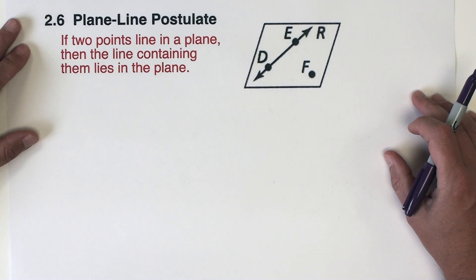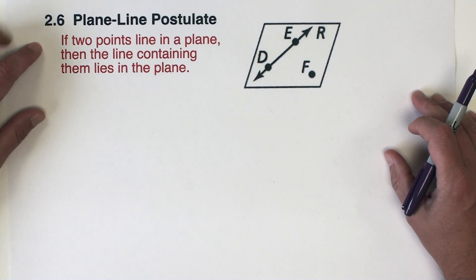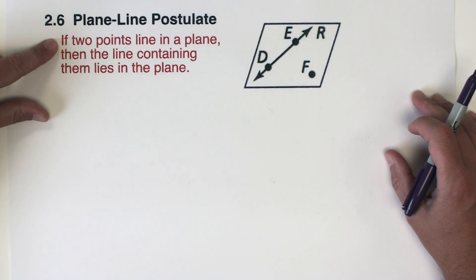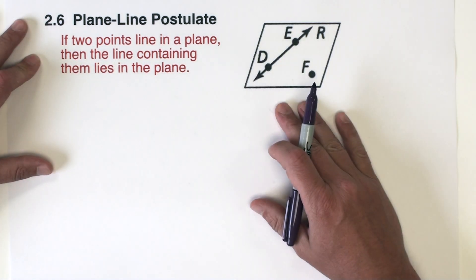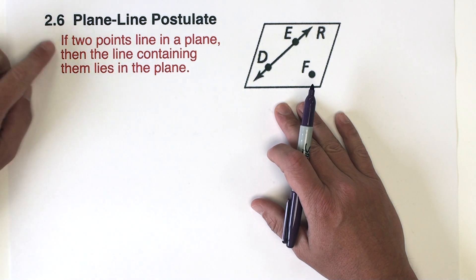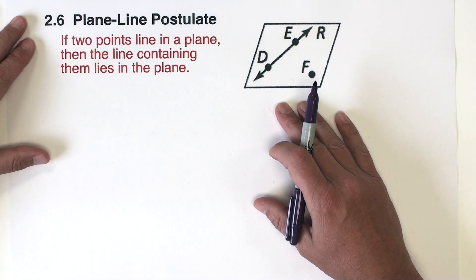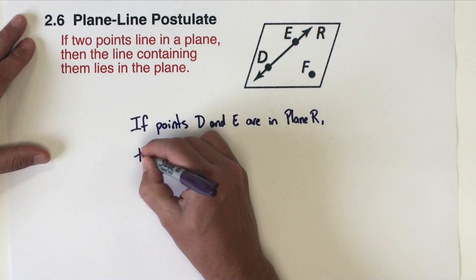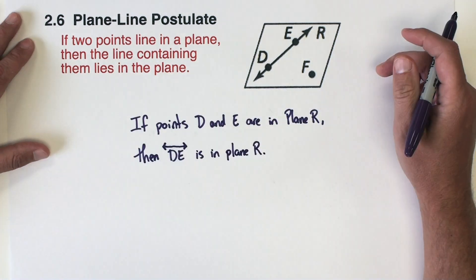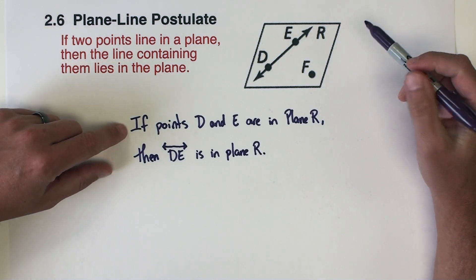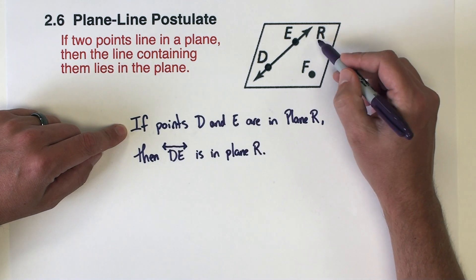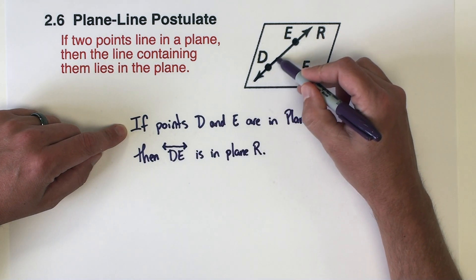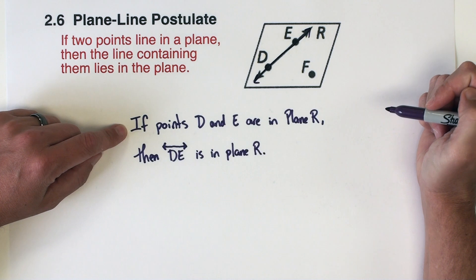The next postulate is the plane-line postulate, and it reads: if two points lie in a plane, then the line containing them lies in the plane. Specific to this diagram, I might write: if points D and E are in plane R, then line DE is in plane R.